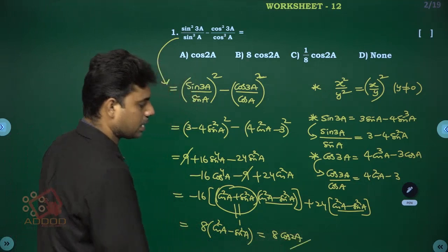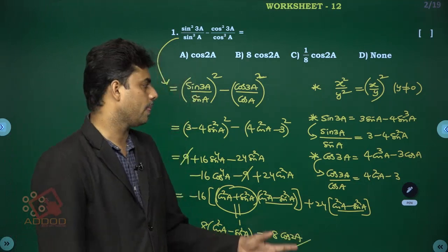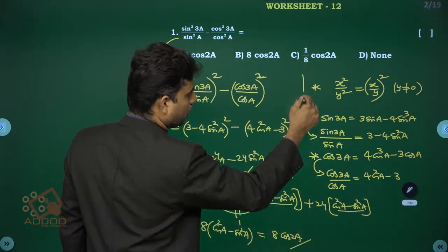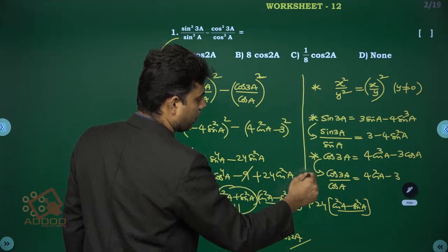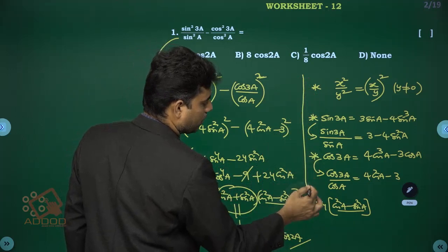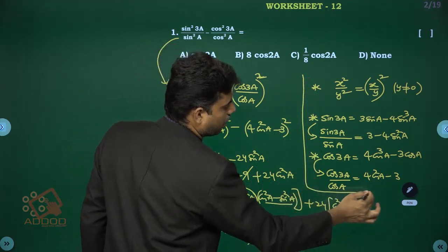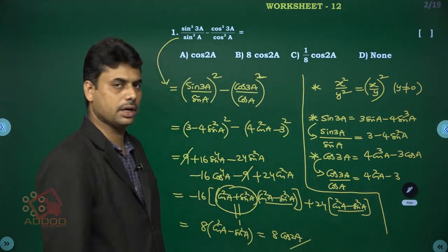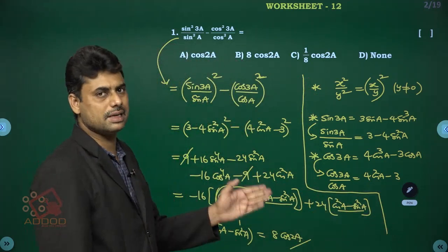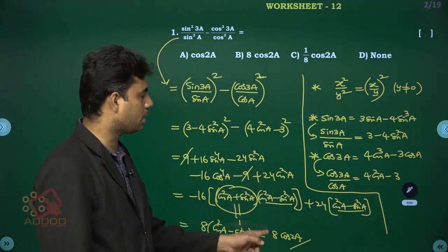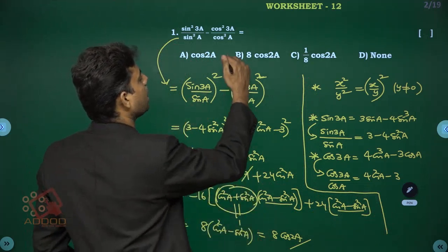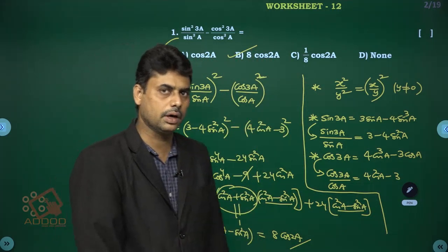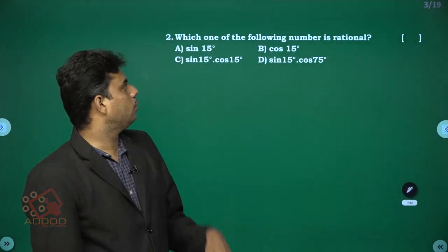The answer is 8 cos 2a, which corresponds to option B.